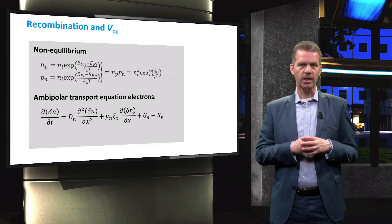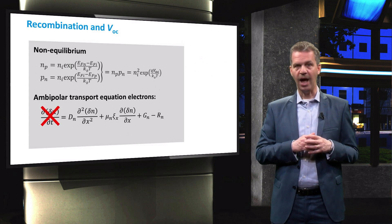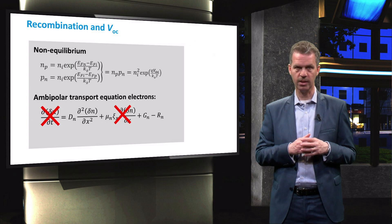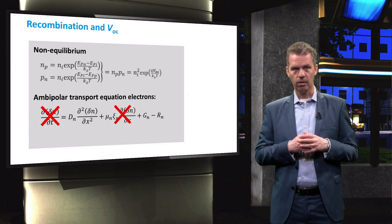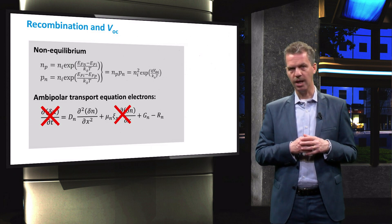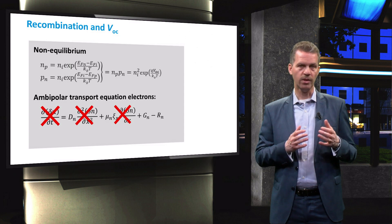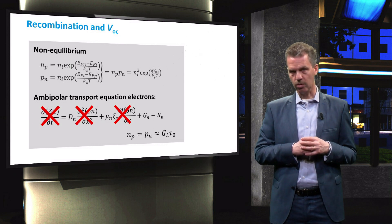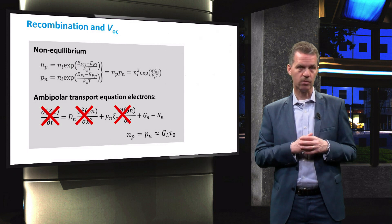This equation is shown for electrons in P-type material. In static equilibrium, assuming that the electric field strength in the quasi-neutral regions is zero, we can reduce the equation to a simpler form. When we look far away from the metallurgical junction and under uniform generation, the diffusion term can also be crossed out as a good first-order approximation. Under these conditions, the minority carrier concentrations approximate the generation rate times tau nought, representing the lifetime of the carriers. Please try to work this out yourself.